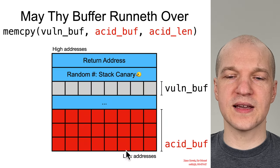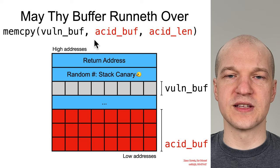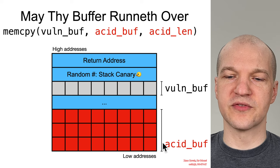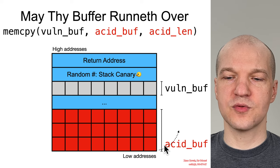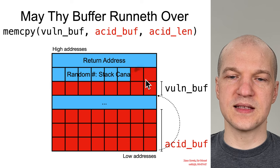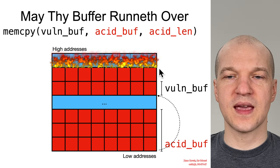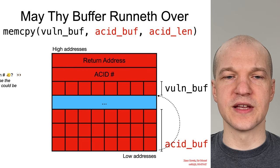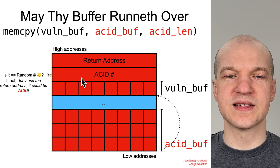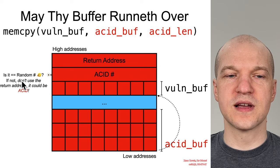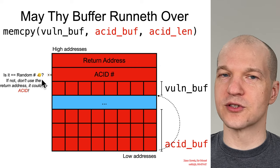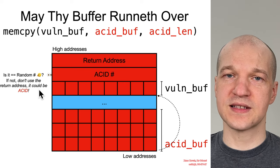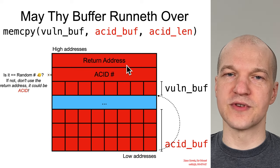Going back to the basic stack overflow — with a memcopy from an attacker-controlled buffer of attacker-controlled length into the vulnerable buffer — the idea is that it copies data and smashes the stack canary before it ultimately smashes the return address. There will then be a check before returning: is this location still the random number? Is it still the correct and uncorrupted stack canary? If so, return. If not, don't return because the return address could be attacker-controlled.